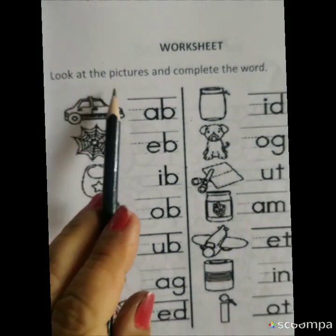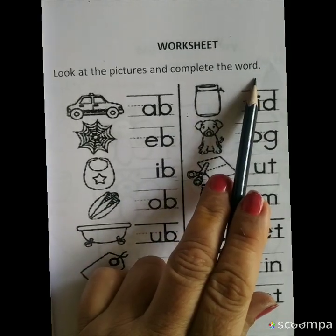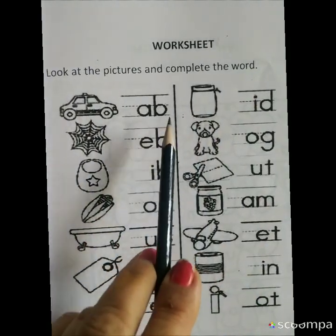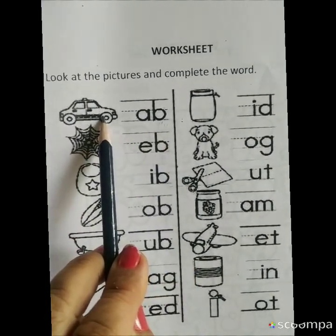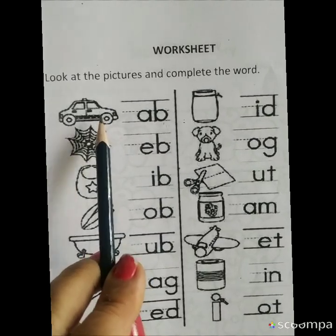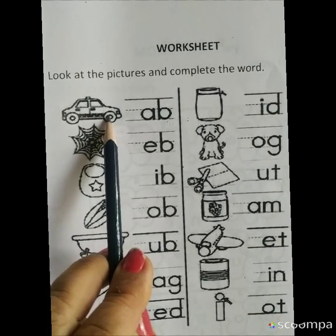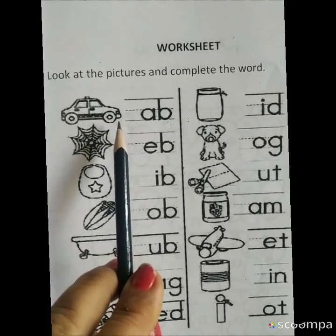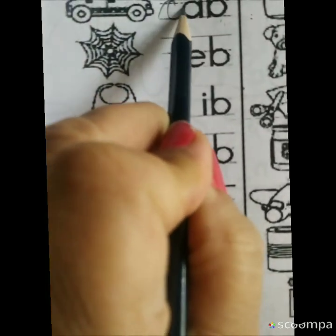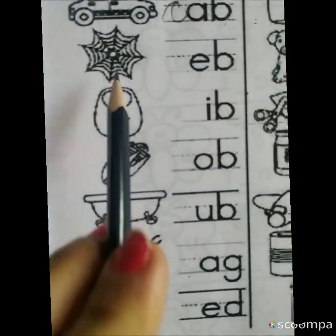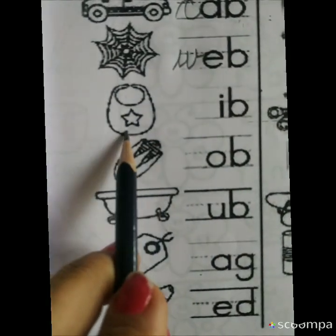Now next page is look at the picture and complete the words. What is this? This is a car. But when we hire a car from Ola or Uber, that is called cab. Cab. This is web. This is bib.